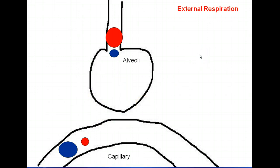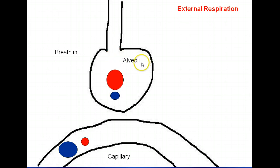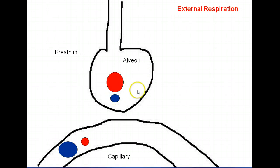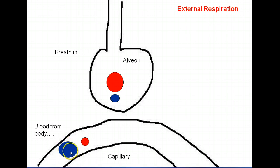Let's start with you taking a deep breath in. When you take a deep breath in, you're going to breathe in oxygen and very little CO2. So the air in the alveoli is going to have a high partial pressure of oxygen and a low partial pressure of carbon dioxide. The blood coming from the body — specifically from the right side of the heart — is going to have a high partial pressure of carbon dioxide and a low partial pressure of oxygen.